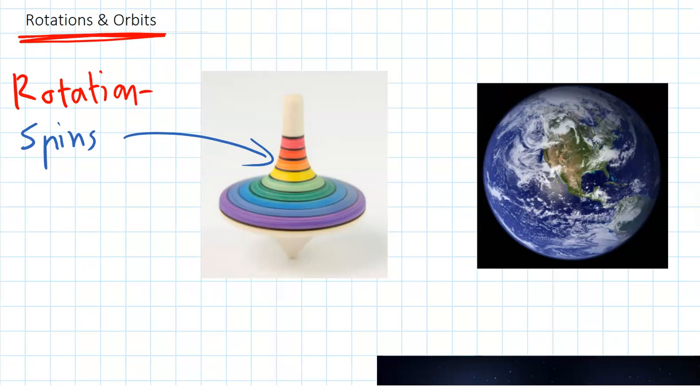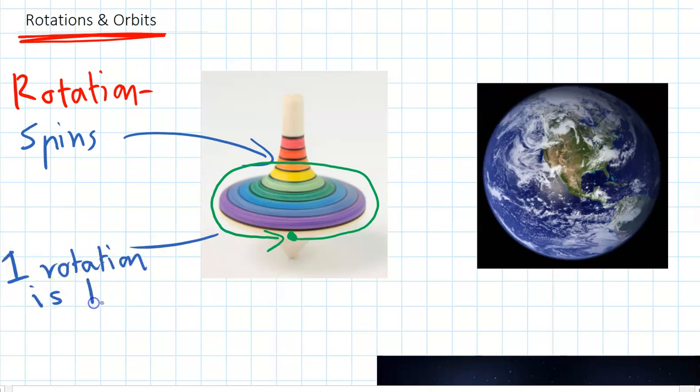And when we talk about a rotation, that means that the object has done one full spin. So if this spinning top, if we look at the point here and we wait until that spinning top spins around one full spin, then that's a rotation. So one rotation is a full spin.